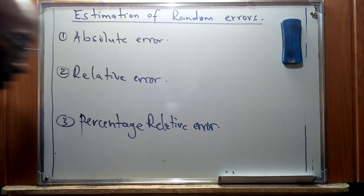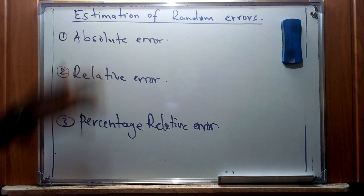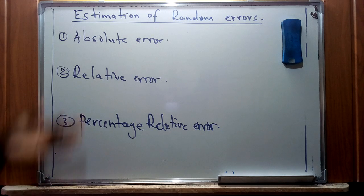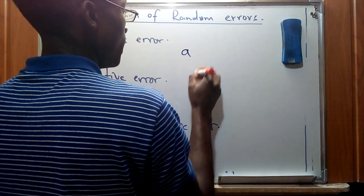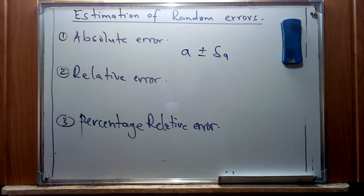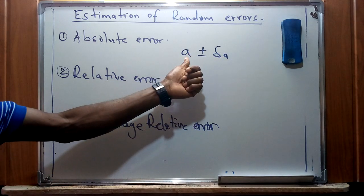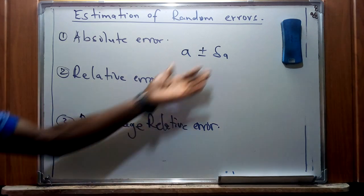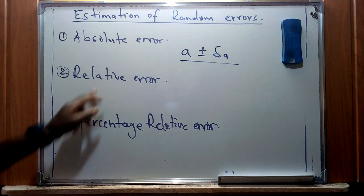These are the methods we can use to express errors. For absolute error, this is referred to as the size of uncertainty in a quantity expressed in the same units as the quantity. If we are expressing a quantity A, we express the standard error as A plus or minus delta A. That is the way we express absolute error.